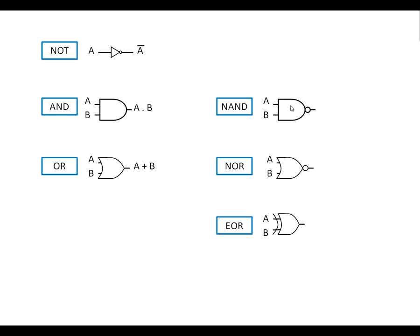The NAND gate is an AND gate; the circle here represents inversion, so we have A and B and then we invert the output—put a bar over the whole thing. Same with the NOR gate: we've got A or B and then we put a bar over the whole thing.